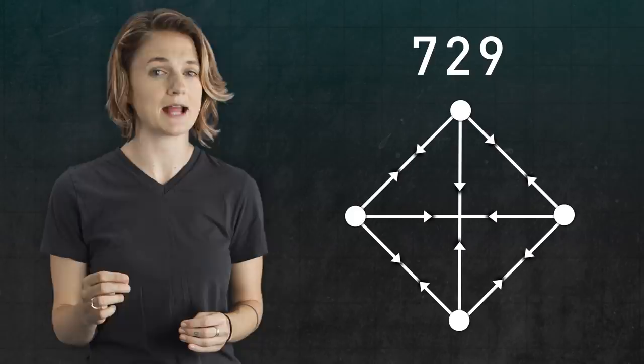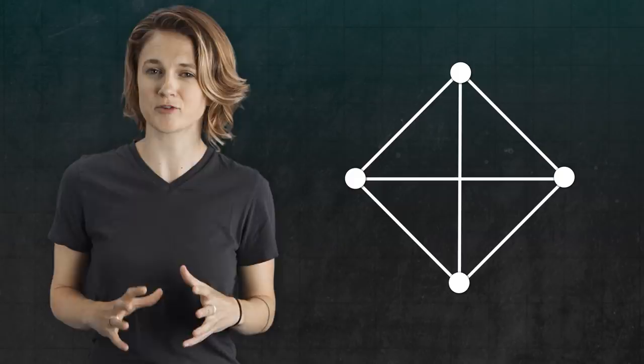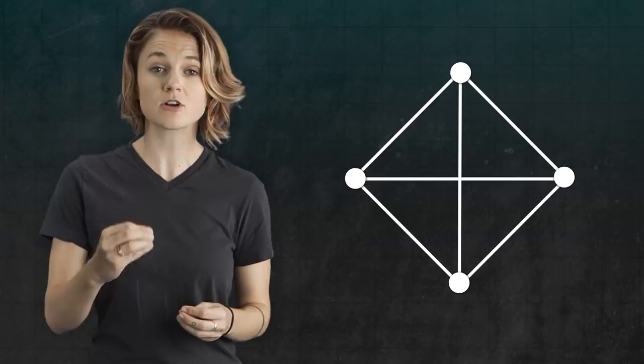When working with the undirected graph, we're collapsing all 729 possibilities into one. There's a lot less information encoded in it. If we consider information as flowing through the brain, from neuron to neuron with a specific orientation, we're most interested in highlighting the graph structures associated with that directed flow.